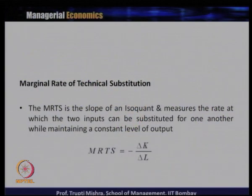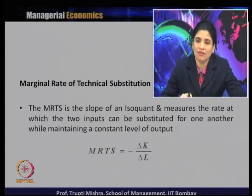What is marginal rate of technical substitution? As we know that capital and labour are closely substitutable for each other. Whenever the producer changes the production process from one level to another, they change the input combination. When the producer increases the amount of one input, they have to reduce the amount of the other input. Marginal rate of technical substitution is the rate at which two inputs can be substituted for one another while maintaining a constant level of output.